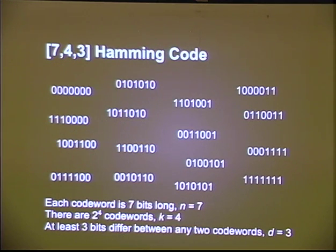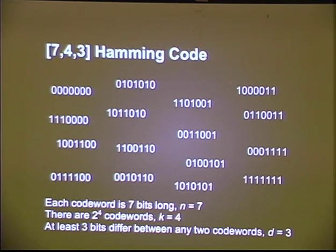The classic example is the 7,4,3 Hamming code — or sometimes called the 7,4,4 Hamming code — the first one Hamming published. The story is he was working with punch card systems, frustrated with the unreliability of reading bits off a punch card. The 7,4,3 Hamming code is made up of 16 code words, each seven bits long. To transmit information, you pick one of these seven-bit code words. You represent four bits of data per code word because two to the fourth is 16.